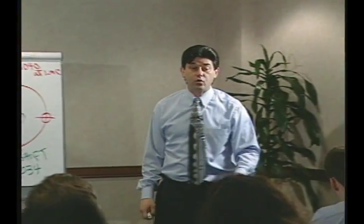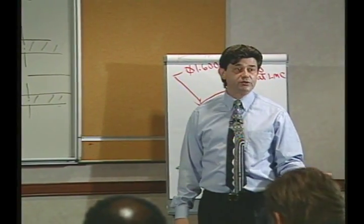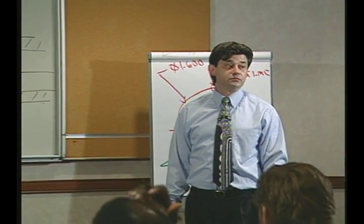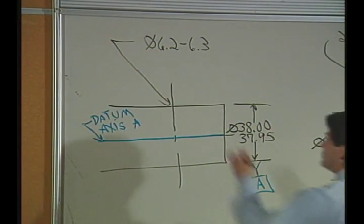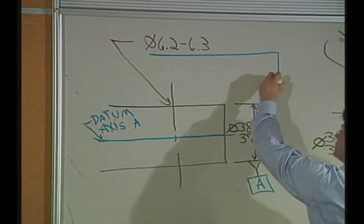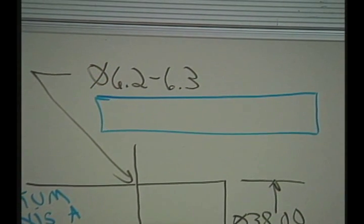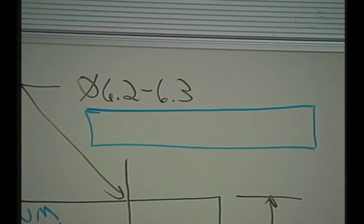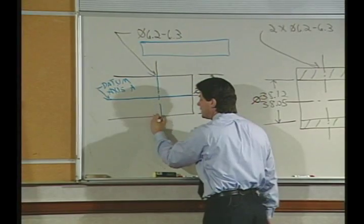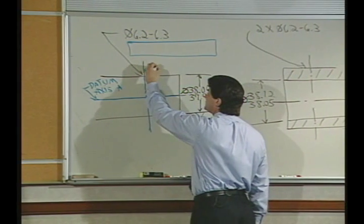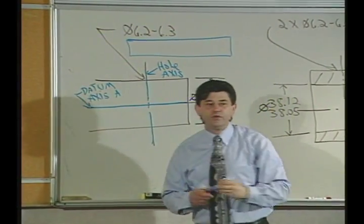Now the reason we have a datum axis is to measure things from or orient things to something that gets measured from A. What is the obvious choice of something to get measured from A? The hole itself. All right, so the little hole. If I was to give this some sort of geometric control, I would simply relate it to A. When I did that, the portion of the hole that I would be relating to A would be the axis of the hole. So really this is line geometry, the axis of this hole in relationship to the axis of A.